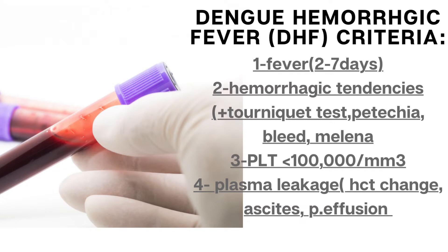Thrombocytopenia — 100,000 cells per millimeter cubed or less. Evidence of plasma leakage due to increased vascular permeability, manifested by at least one of the following: a rise in hematocrit equal to or greater than 20% above average for age, sex, and population; a drop in hematocrit following volume replacement treatment equal to or greater than 20% of baseline; or signs of plasma leakage such as pleural effusion, ascites, and hypoproteinemia.